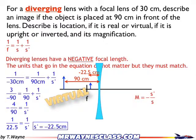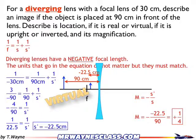The magnification equals negative s prime over s — image distance over object distance. So magnification equals negative of negative 22.5 over 90, which gives positive one-fourth. Because the magnification is positive, the image is upright, and because it's one-fourth, the image is one-fourth the original size of the object.